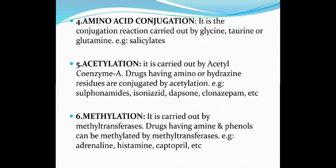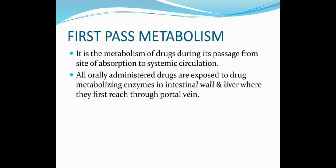Fifth, acetylation — it is carried out by acetyl coenzyme A. Drugs having amino or hydrazine residues are conjugated by acetylation, for example sulfonamides and isoniazid. Last, methylation — it is carried out by methyl transferase. Drugs having amine and phenol groups can be methylated by methyl transferase, for example adrenaline, histamine, and captopril.